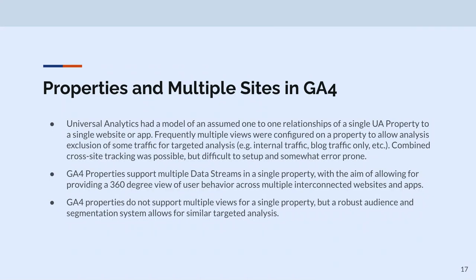Properties: in UA you'd have a property and might have multiple views, using filters to exclude external traffic and drill down. Now there are no views — it's just a property. The GA4 property will support multiple data streams, so you can actually collect data from multiple sources — a website and an app — and look at a holistic user journey between those two.